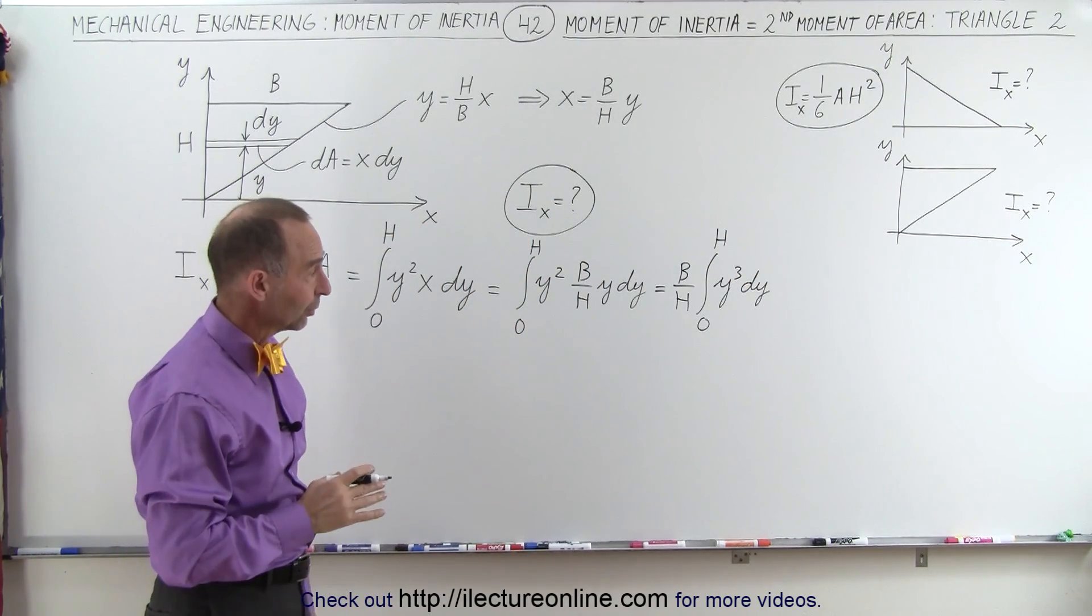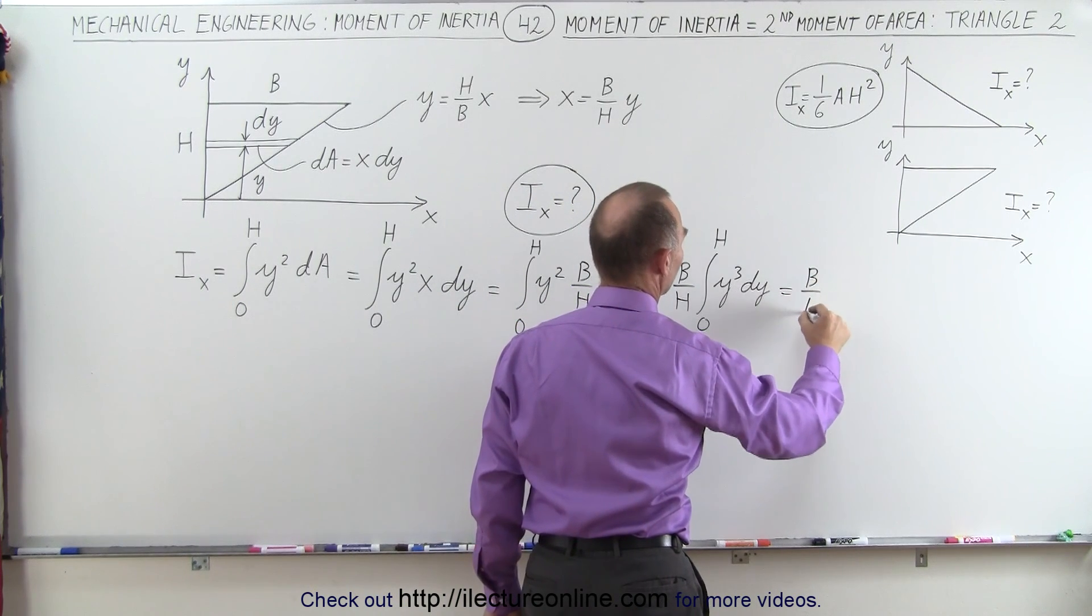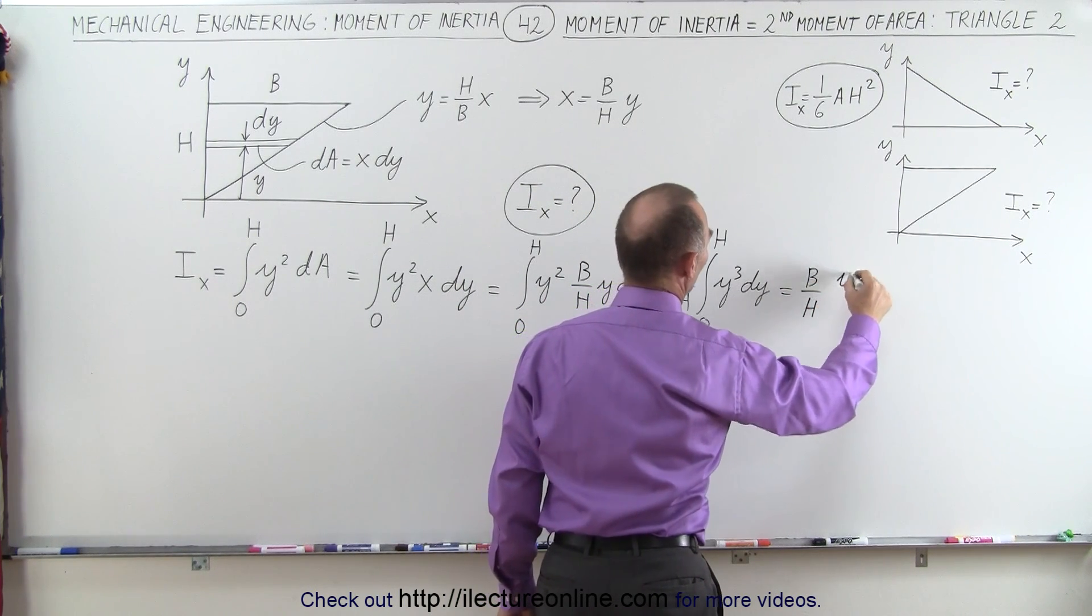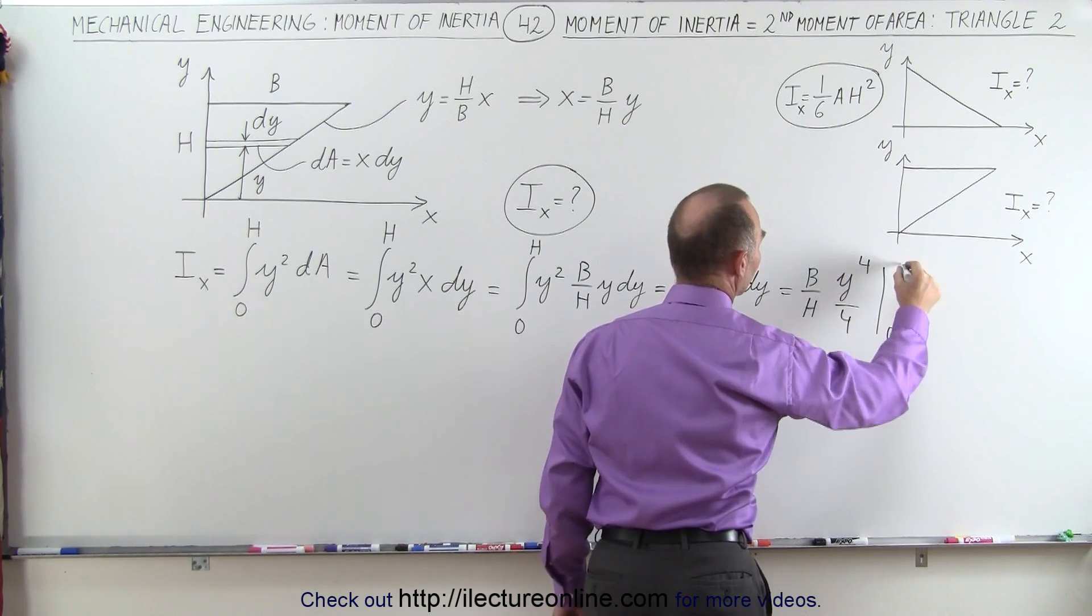Now, that's an easy integral to solve. This becomes equal to b over h times y to the fourth over 4, evaluated from 0 to h.